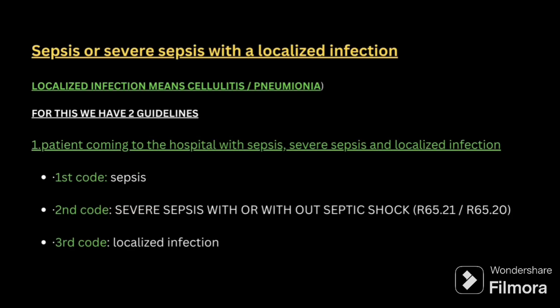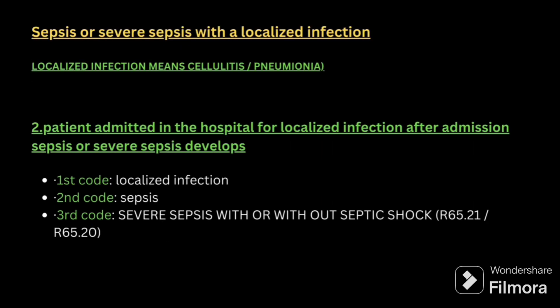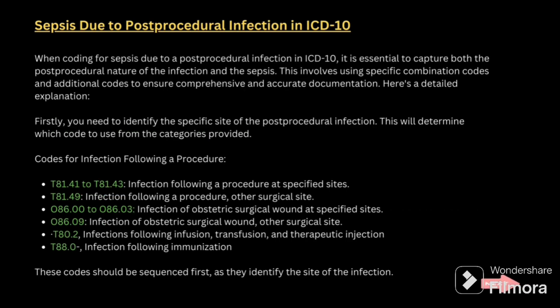Next guideline: sepsis or severe sepsis with localized infection. Localized infection means conditions like cellulitis or pneumonia. There are two types: First, if the patient is coming for treatment of sepsis, severe sepsis, and localized infection — first code sepsis, second code severe sepsis, third code localized infection. Second, if the patient is admitted for a localized infection and then sepsis or severe sepsis develops after admission — first code localized infection, second code sepsis, third code severe sepsis with or without septic shock. The reason for encounter should be the primary diagnosis.